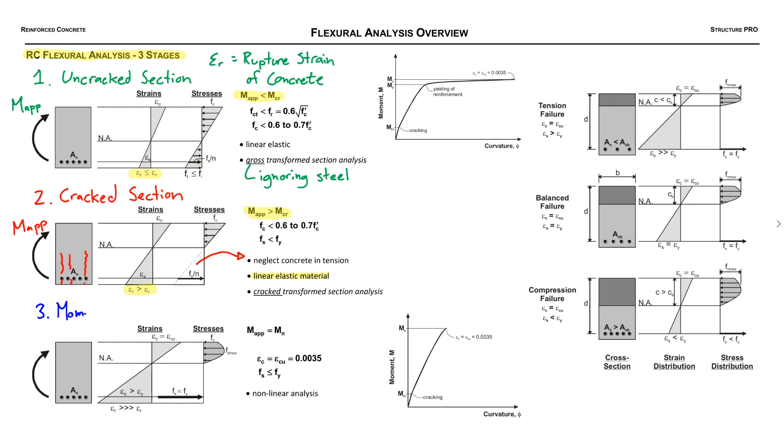Stage three, now this stage is kind of the most complicated. This we're going to call it the moment causing failure. So where the other two are stages, this is actually more of just a single point, it's the failure point, and the applied moment is now M_N or the nominal moment that the beam can actually resist.